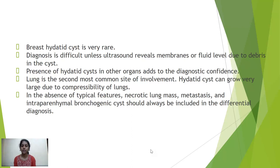Breast hydatid cysts are very rare. Diagnosis is difficult unless ultrasound reveals membranes or a fluid level due to debris in the cyst. Presence of hydatid cysts in other organs adds to diagnostic confidence. The lung is the second most common site of involvement. Hydatid cysts can grow very large due to the compressibility of the lungs. In the absence of typical features, necrotic lung mass, metastasis, and intraparenchymal bronchogenic cysts should always be included in the differential diagnosis.